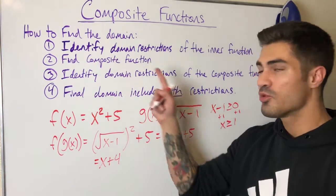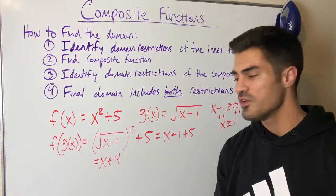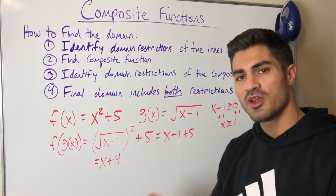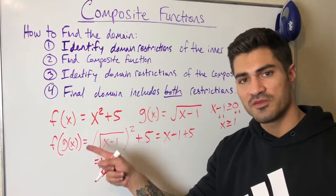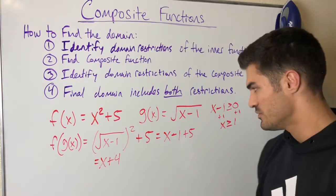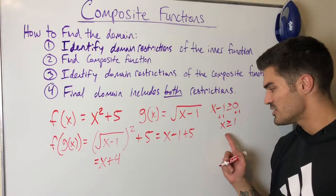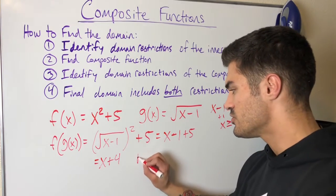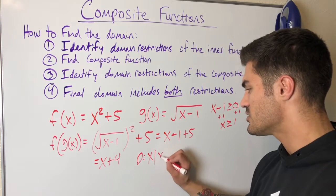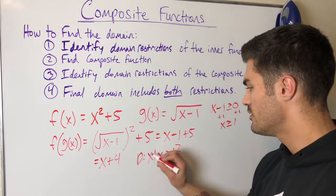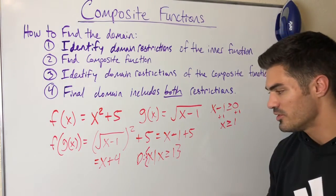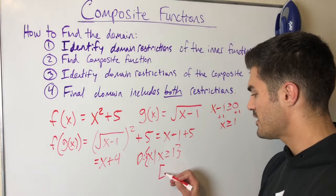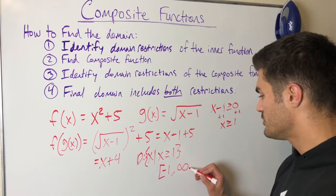This is the most common mistake on these problems: people see the composite function is x + 4, a linear function, and say the domain is all real numbers. But that's not true. Remember, the input must go through the inner function first, and the inner function is restricted to x ≥ 1. So the composite function is also restricted: the domain is x such that x ≥ 1, or in interval notation, [1, ∞).